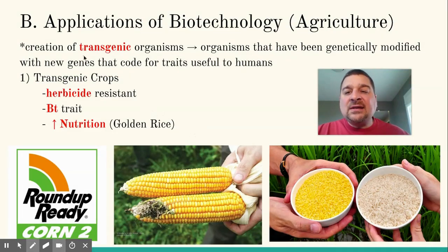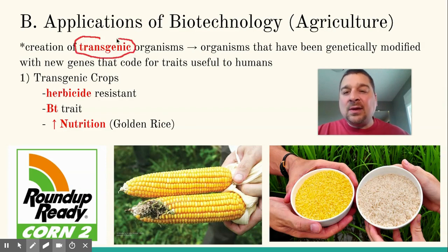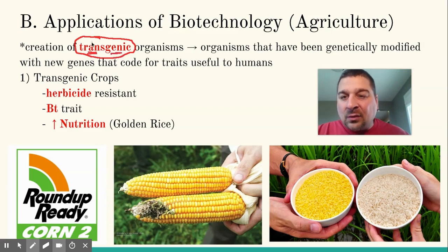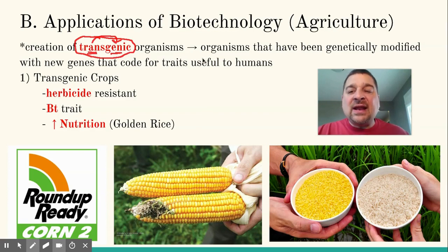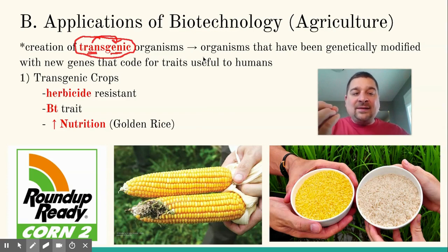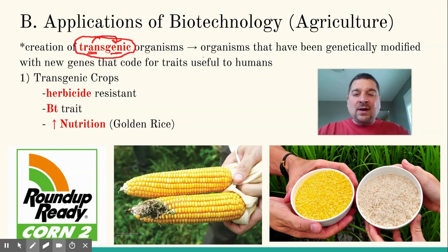One of the first terms you'll need to know when we talk about biotech in agriculture is the idea of a transgenic organism. 'Trans' means across genomes, so these are organisms that have been genetically modified — we have taken genes from one organism and put them into another.